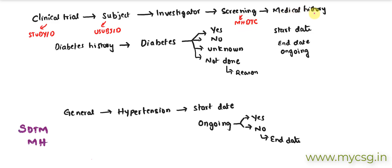There is a variable called DOMAIN in each SDTM dataset. We populate the DOMAIN variable with the value 'MH' because the data presented is medical history. We also store whether the history is diabetes-specific or general medical history in a variable called MHCAT, which is used to distinguish between the two categories.